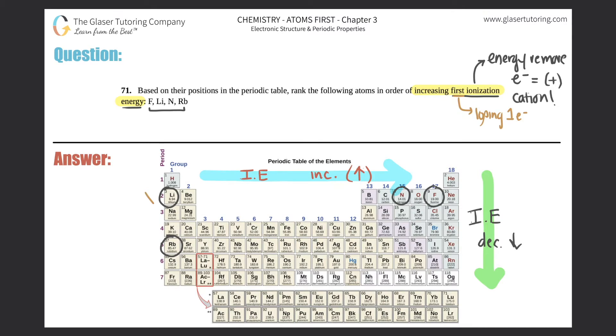The first thing is that I see that three out of the four are in the same period, right? Lithium, nitrogen, and fluorine - they're all in the same period, so that's going to be one trend. And I see that rubidium is very, very lonely by itself. Now, if we use the group trend, it says that ionization energy will decrease once you go from top to bottom.